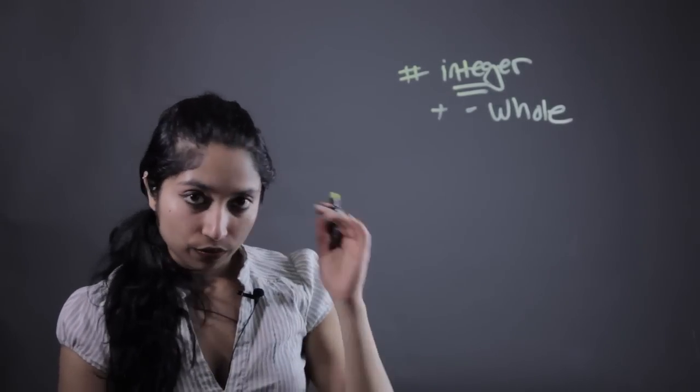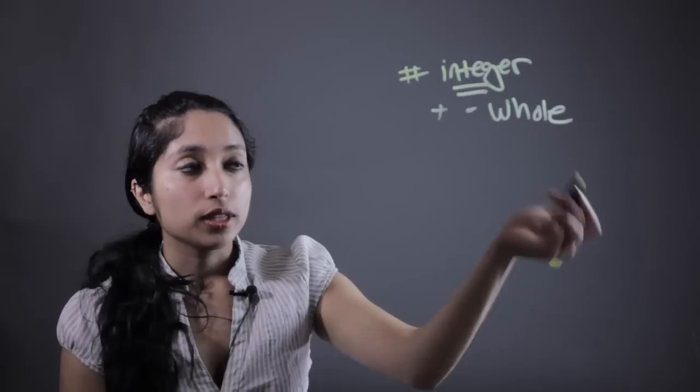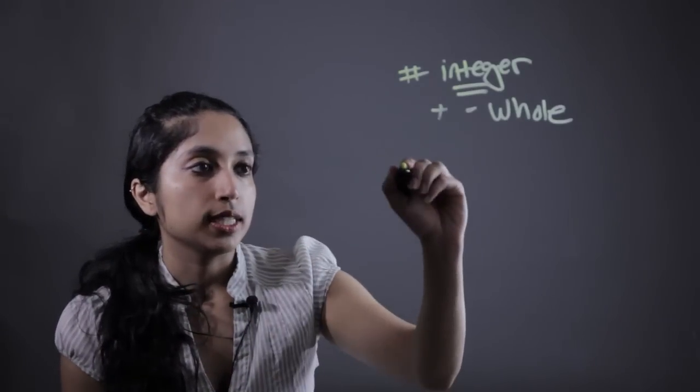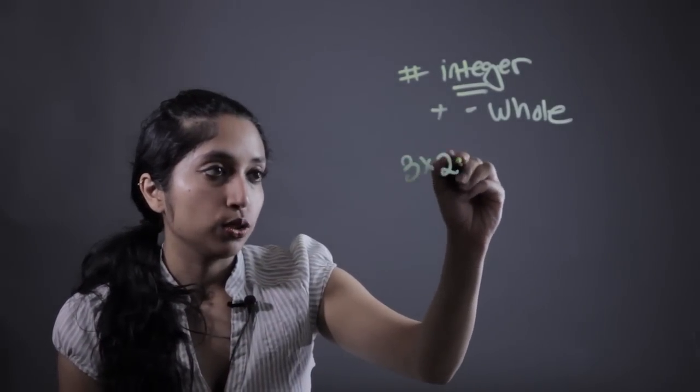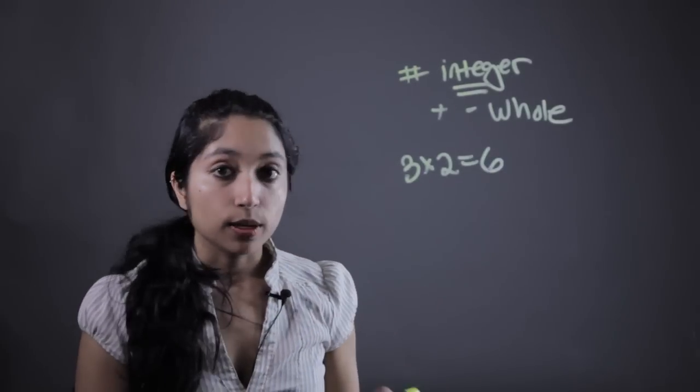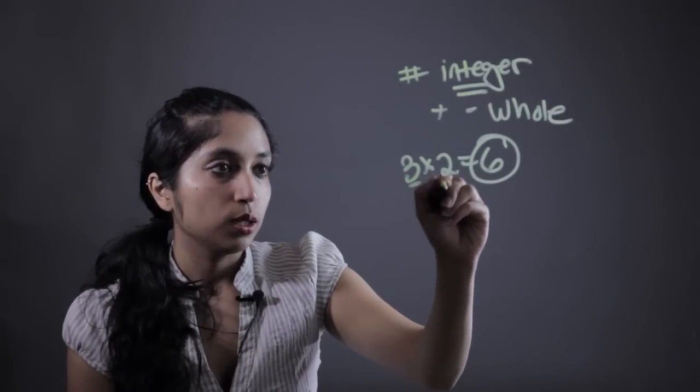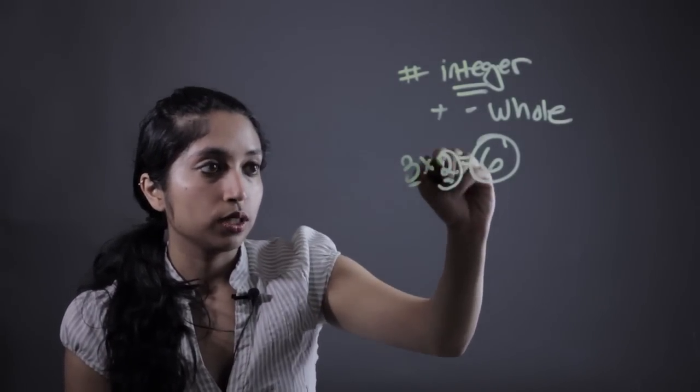And then the best way to kind of enforce and explain what this multiple means is to give tons of examples. So for instance, 3 times 2 is 6. Now 6 would be a multiple of 3 because 3 was multiplied by this 2 integer.